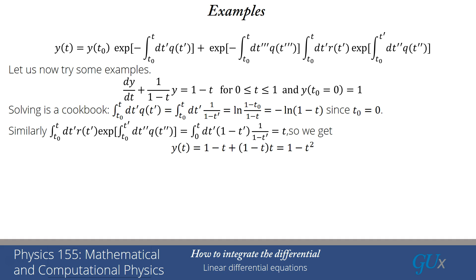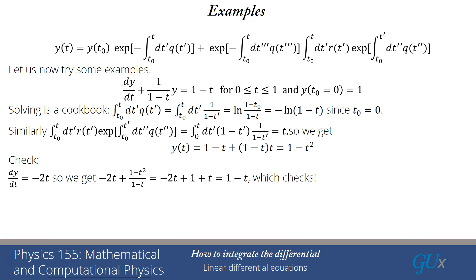That's the solution. Let's check: when t equals 0, we get 1 — correct. For the derivative: dy/dt equals minus 2t. Plugging into the differential equation: minus 2t plus y(t) divided by (1−t) — that's q(t) times y(t). Since 1−t² factorizes as (1−t)(1+t), we get minus 2t plus 1+t, which equals 1−t. And indeed that's r(t). So it checks. We've now solved our first equation using this cookbook.